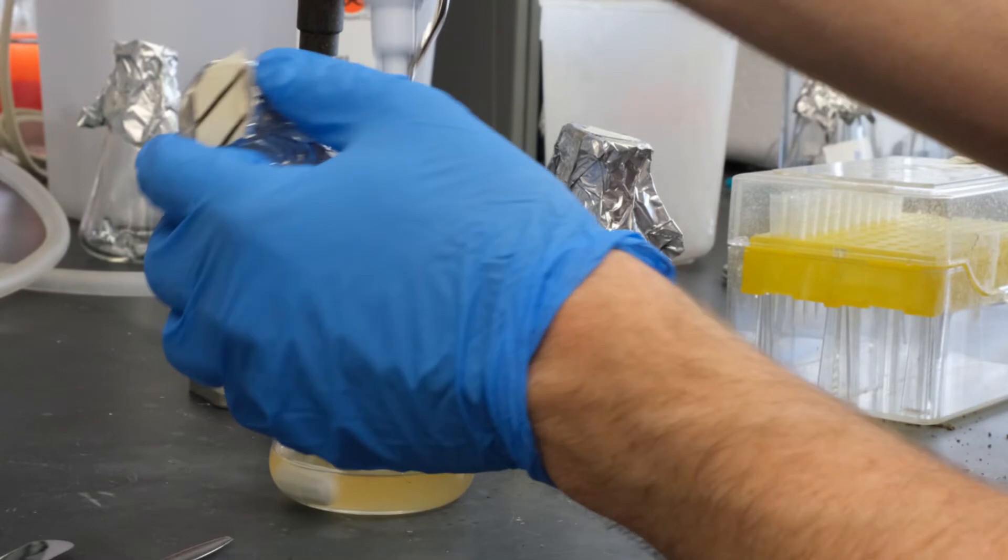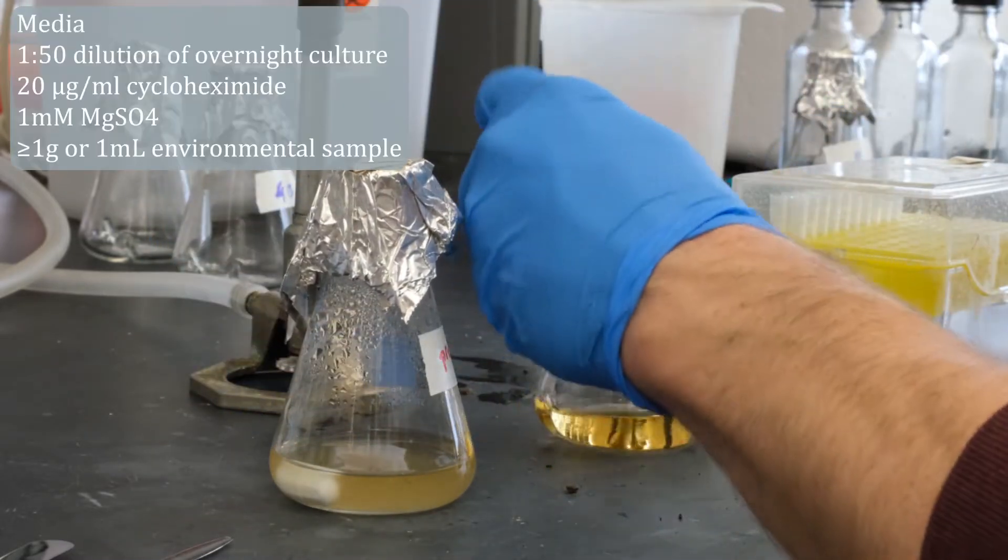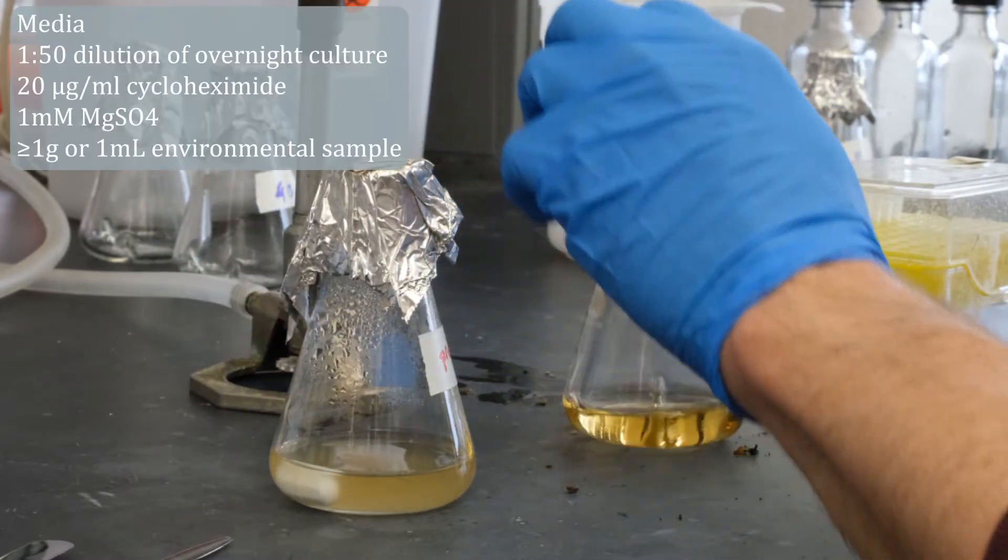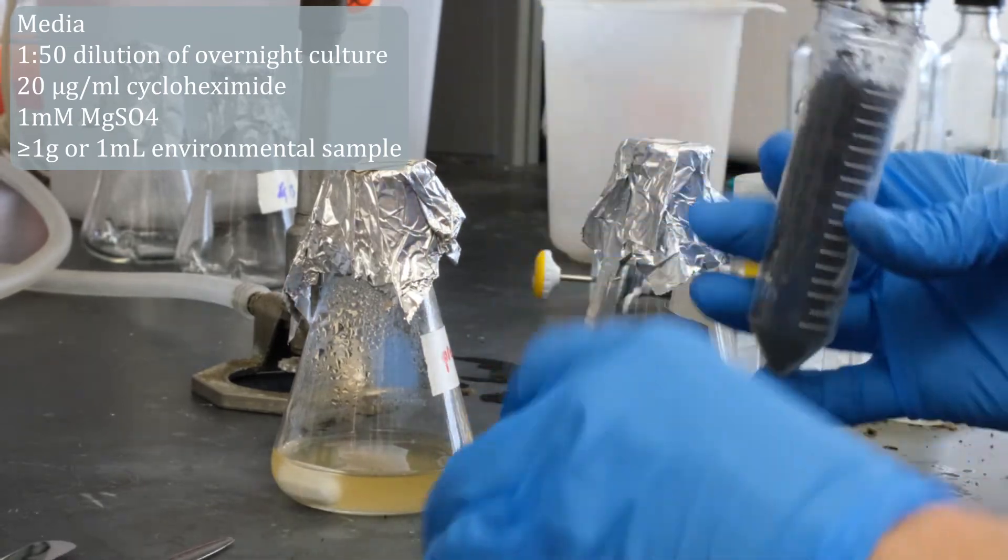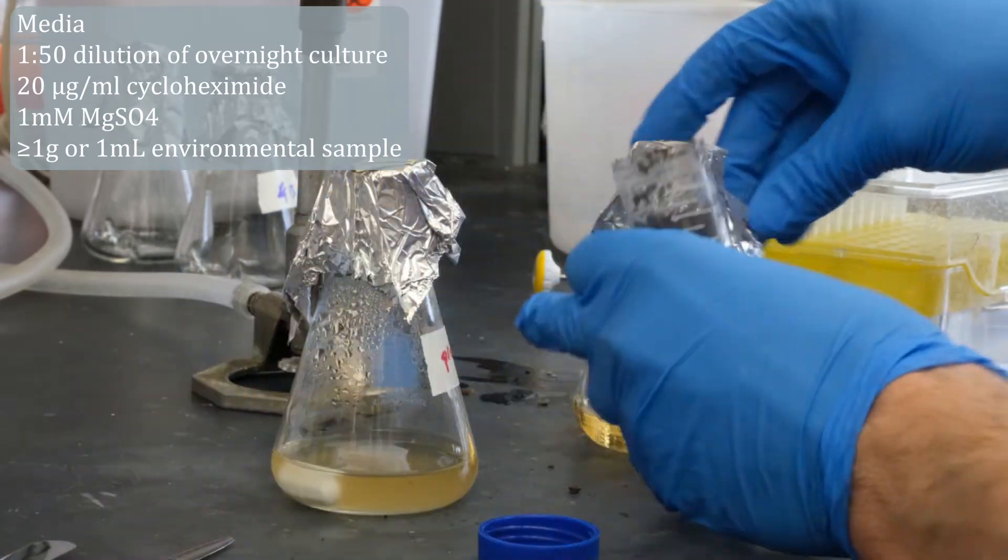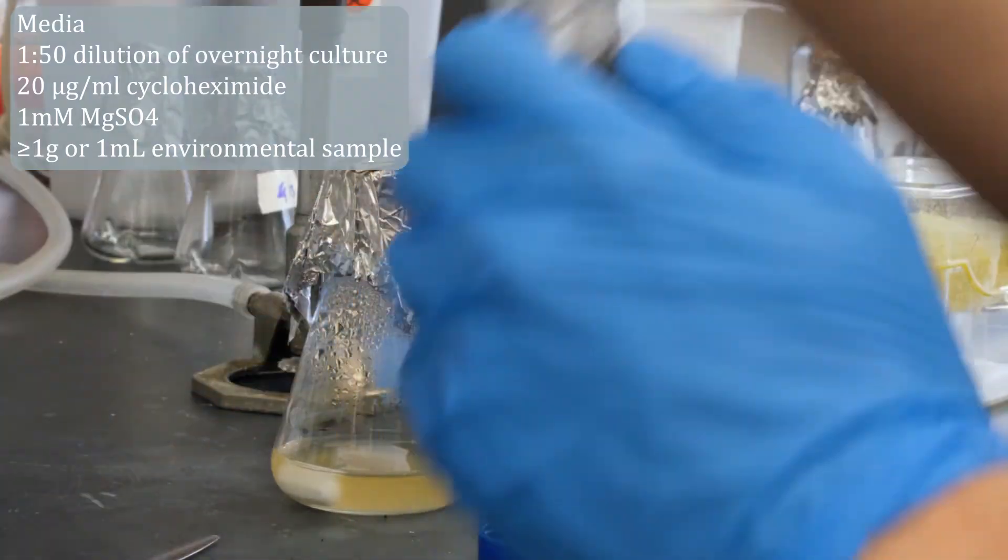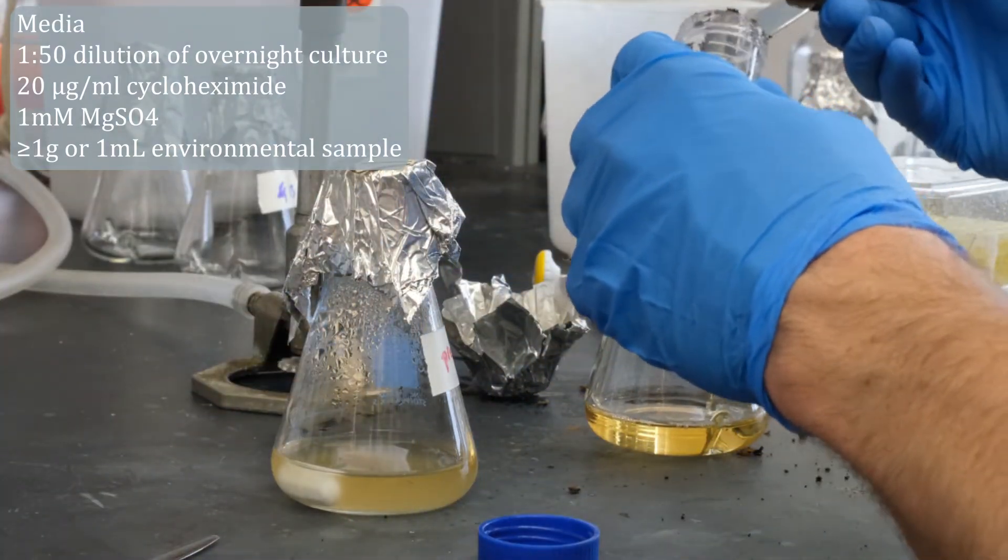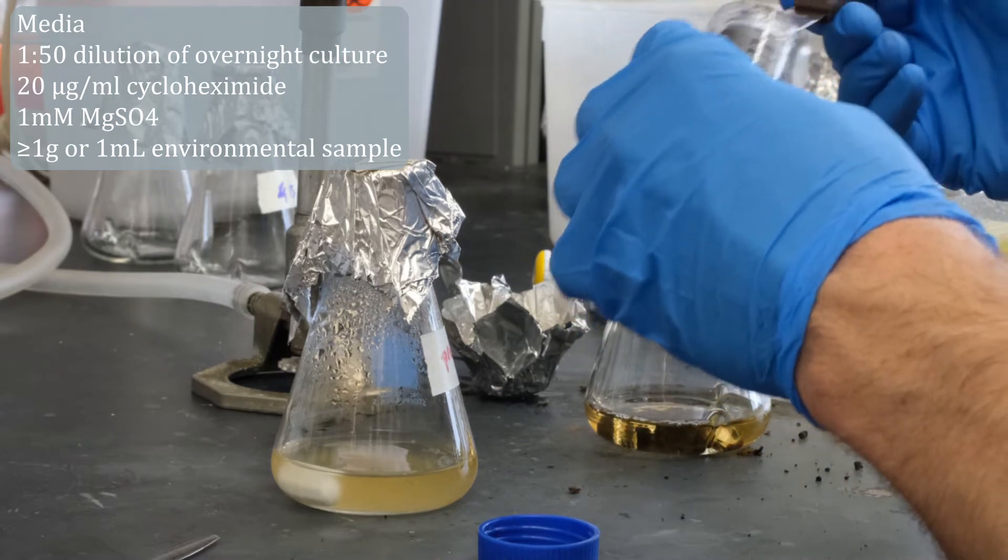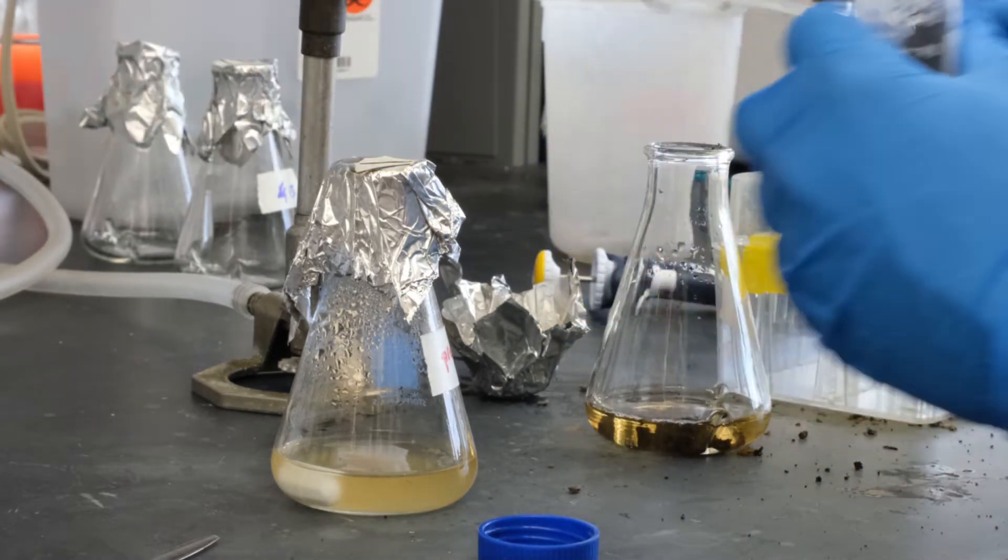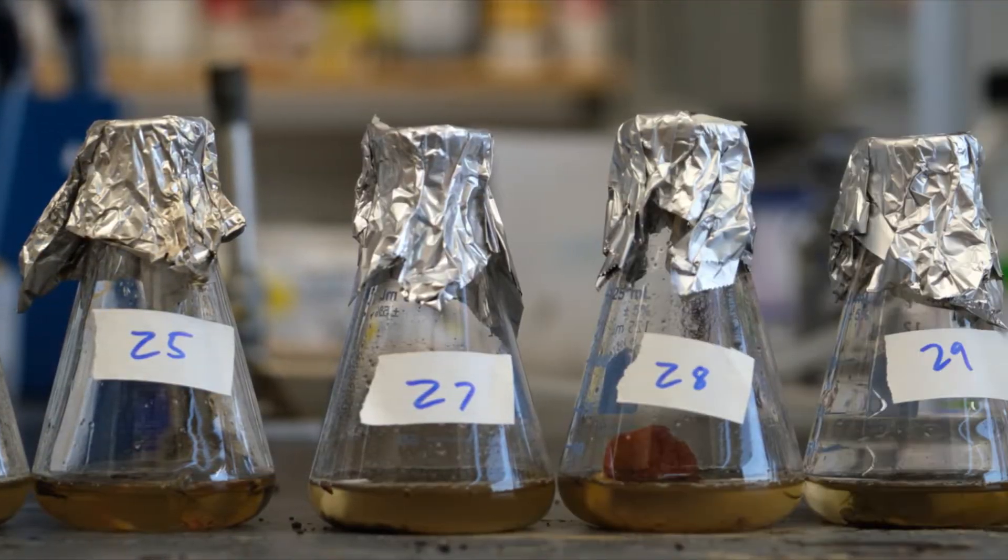Set up an enrichment culture for each environmental sample that you collected. In a new flask with new media, add overnight culture, cyclohexamide, magnesium sulfate, and at least one gram or one mil of the phage sample. Grow it overnight as you would a bacterial culture. You want to grow up a dense culture of the host bacteria, which any phages in your sample can infect and multiply in.